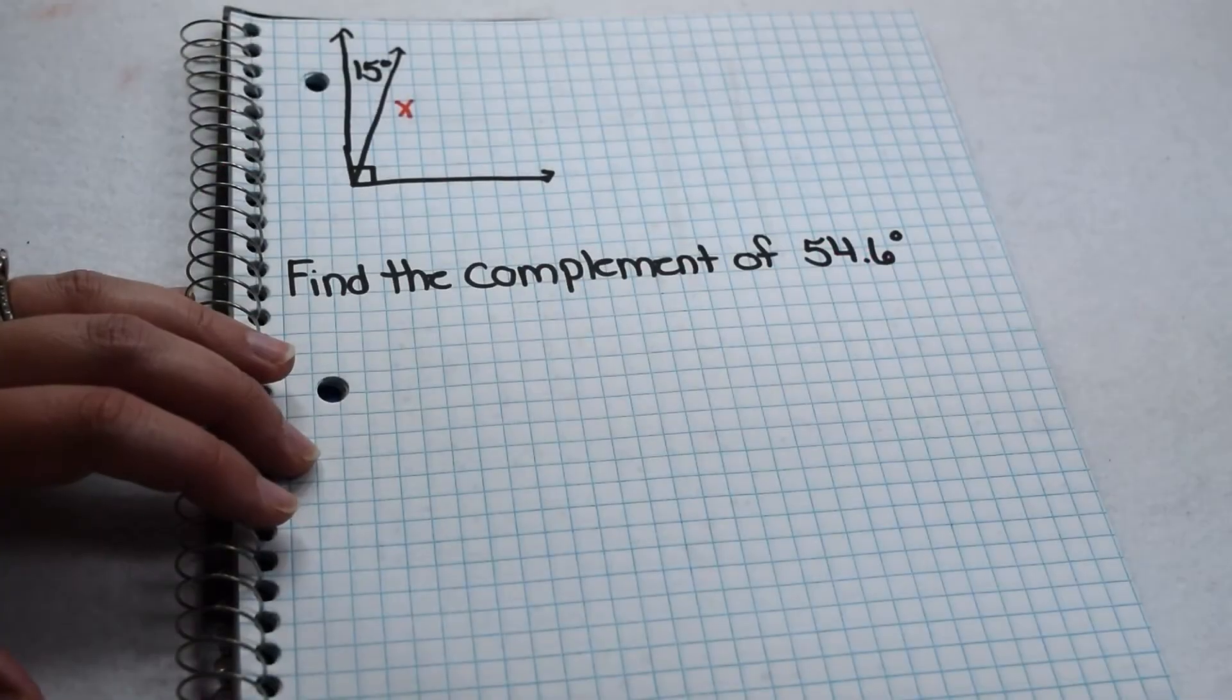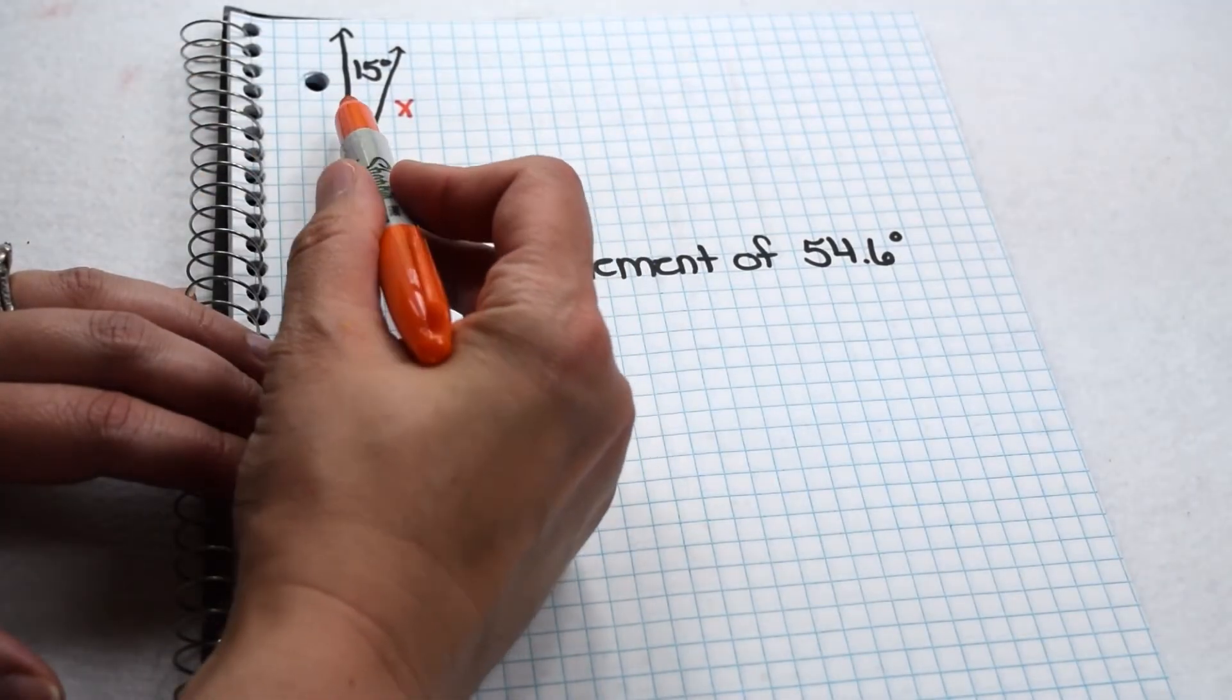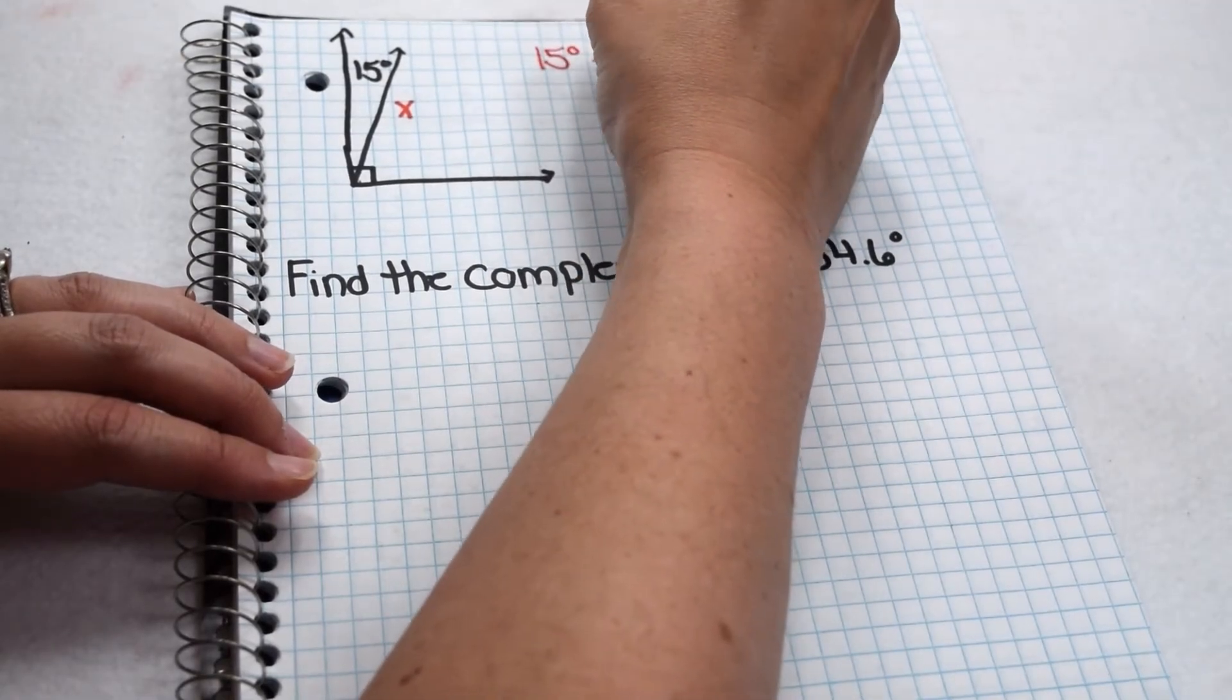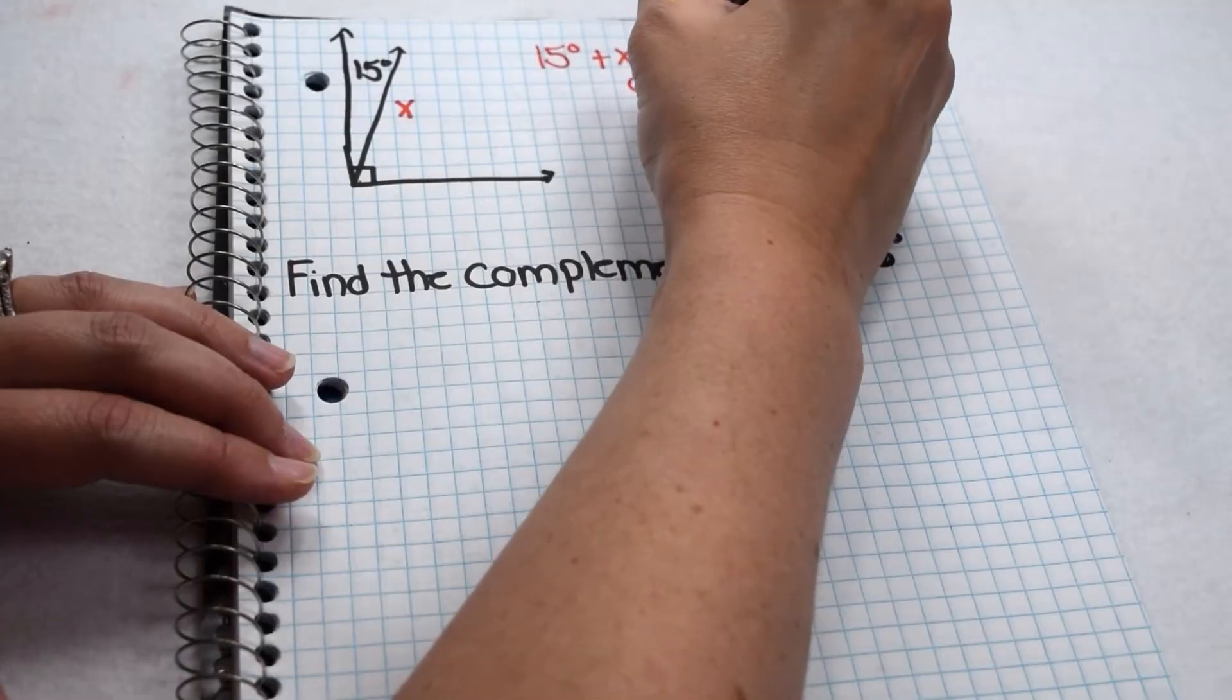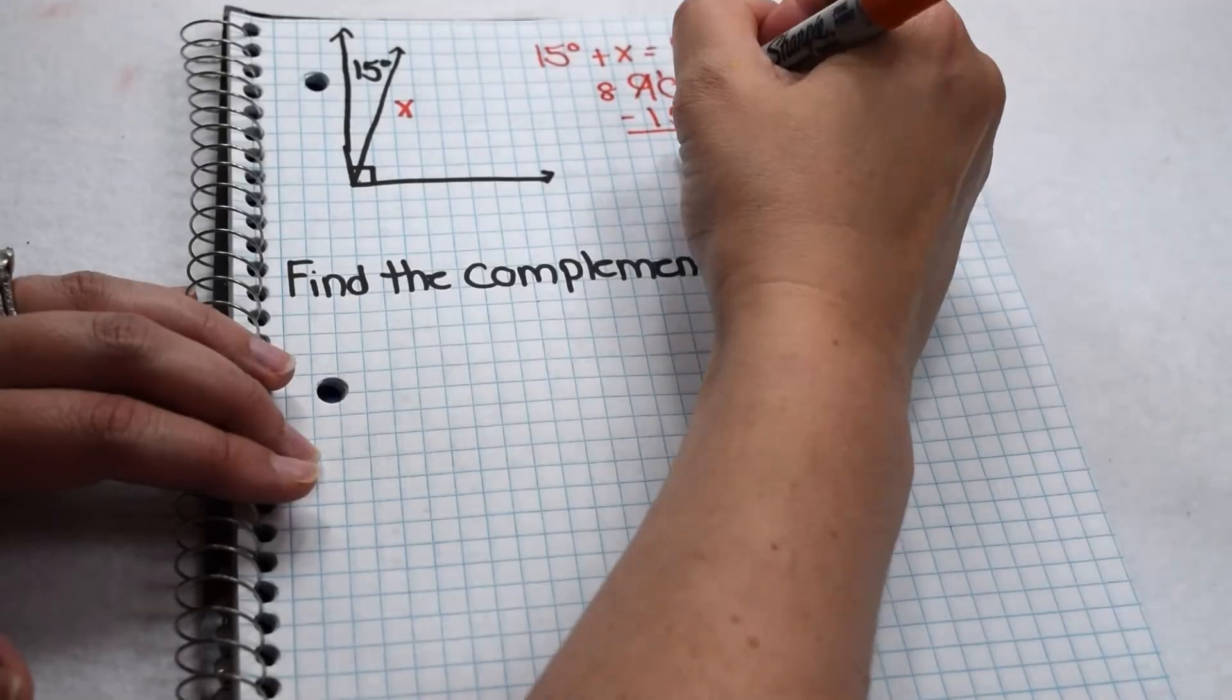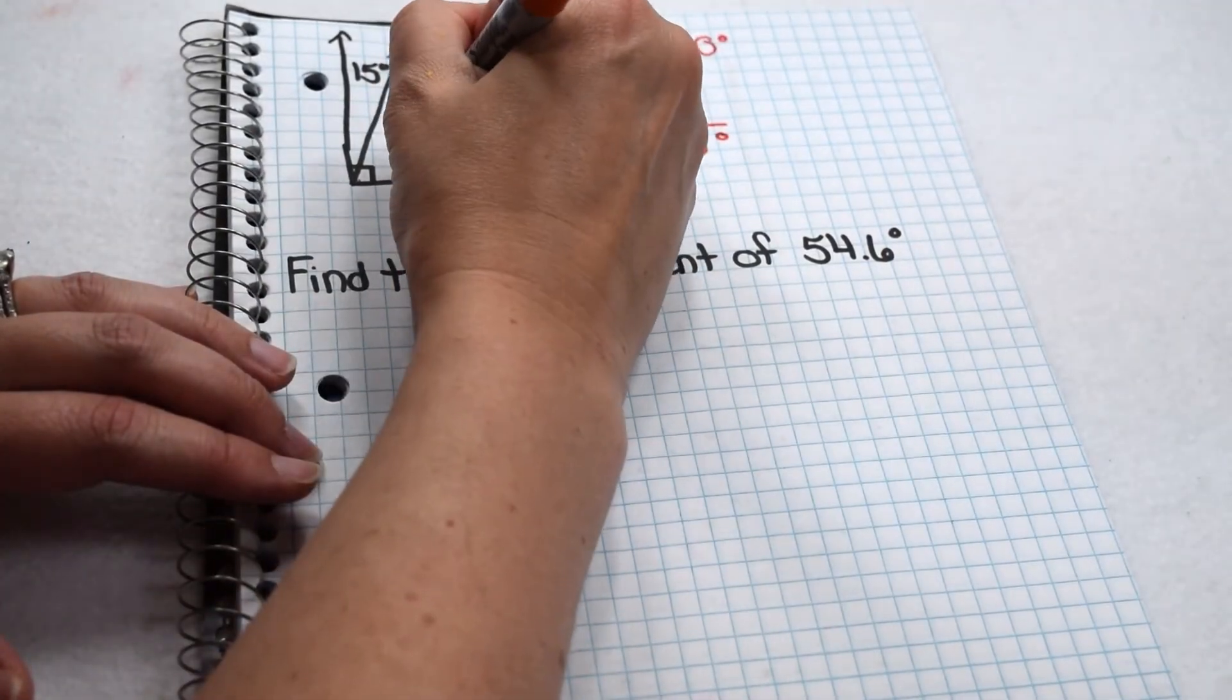Since complementary angles are defined as a pair of angles, we can find the missing angle with and without pictures. Here we can see that we have a 90 degree angle and that these two angles are adjacent, therefore they're complementary. That tells me that 15 degrees plus some unknown amount is going to total up to 90 degrees. So to find that missing amount, we're going to have to do 90 minus 15. So our missing angle here comes out to be 75 degrees.